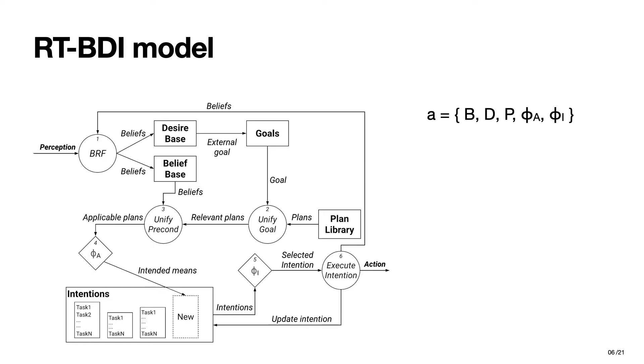Similarly to the most successful approaches proposed in the BDI literature, in our model, an agent A is represented by the set of beliefs, desires, and plans of the agent, while phi-sub-A and phi-sub-I are selection functions. In particular, phi-sub-A chooses a plan, among the applicable ones, to be executed for achieving a selected goal, thus becoming an intention. Phi-sub-I, instead, selects the next task to be performed at each cycle, among all those belonging to a currently active intention.